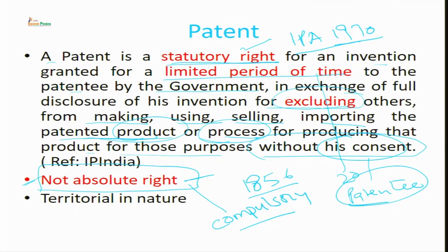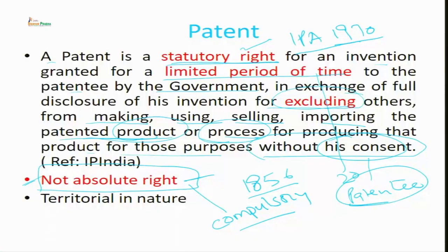If a patent is not working for 3 years, and it is not in the public interest, there is no accessibility or affordability of that product, or if it is not working in the territory of India, then the Indian government has made some provisions. For example, similar to section 52 under the Indian copyright act relating to fair dealing, exceptions are also provided in the Indian Patent Act for using a patented product without permission of the patent holder.